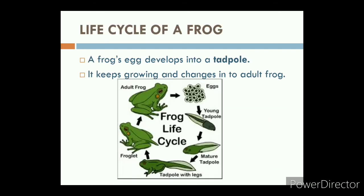Let us discuss the life cycle of a frog. A frog's egg develops into a tadpole. It keeps growing and changes into an adult frog. Observe the picture carefully. Eggs hatch into tadpole. Tadpole develops into froglet. Froglet matures into adult frog.